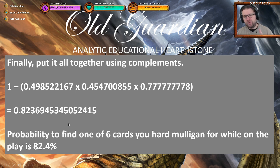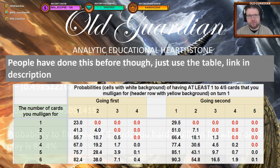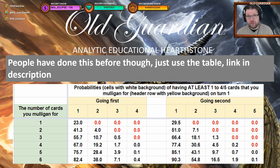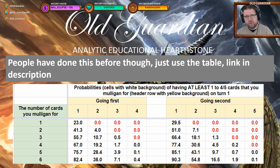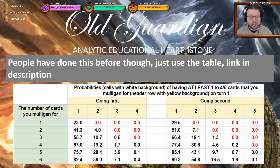So the probability to find one of six cards that I'm mulliganing for on turn one when I'm on the play is 82.4%. But you're not going to do that math every time — and no one else is going to either. Hearthstone has been out for a few years and lots of people have already done the math. There's a link in the description to a table that sums up the results of various probabilities for when you're on the play, for when you're on the coin, and when you're looking for a specific number of cards. In that table, going first and mulliganing for one of six cards, I will have at least one 82.4% of the time — exactly the result we got the hard way.